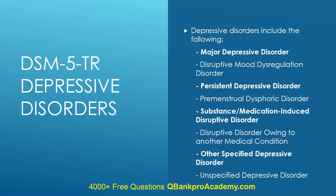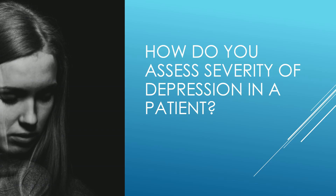In the DSM-5-TR, depressive disorders include the following: major depressive disorder, disruptive mood dysregulation disorder, persistent depressive disorder, premenstrual dysphoric disorder, substance/medication-induced depressive disorder, depressive disorder owing to another medical condition, other specified depressive disorder, and unspecified depressive disorder.